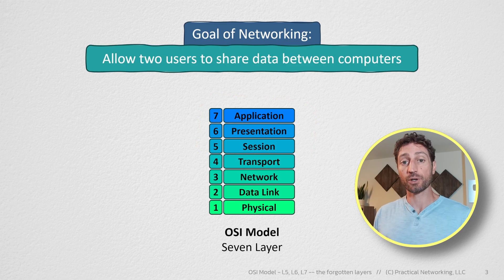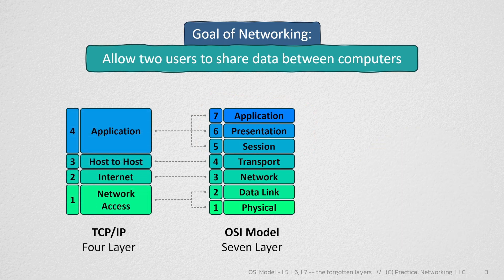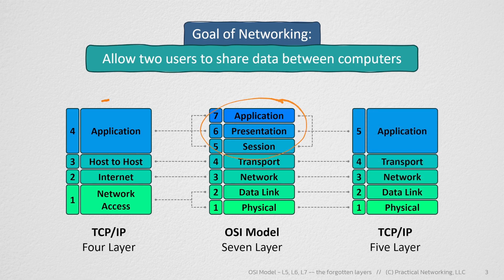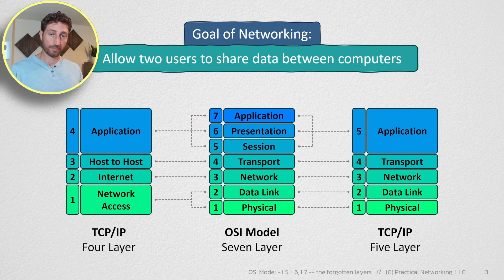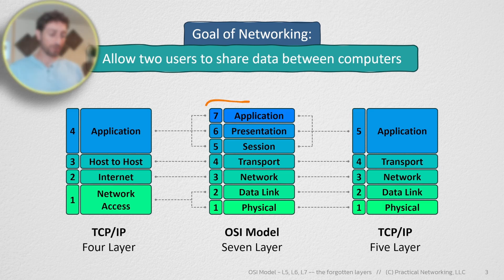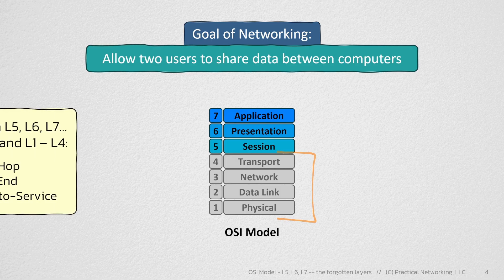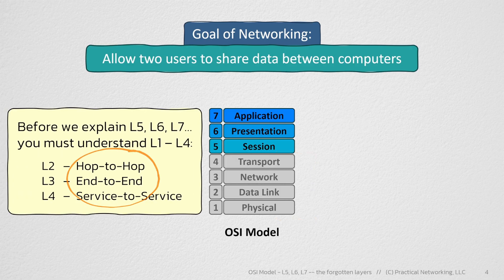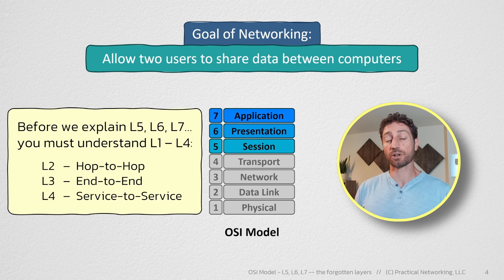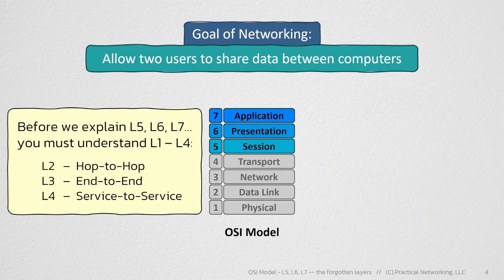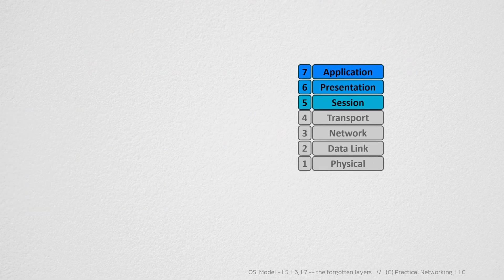I call these the forgotten layers of the OSI model. Part of that is because the other popular networking model — the TCP/IP model — simply combines these layers as a single aggregated application layer. There's good reason for that, and you'll understand those reasons towards the end of this video. What I want to do is unpack the details of layers 5, 6, and 7, and specifically how each contributes towards the goal of networking. Before we can understand these layers, you must understand the terms hop-to-hop, end-to-end, and service-to-service. If you're unfamiliar with those, please check out my other two OSI model videos.